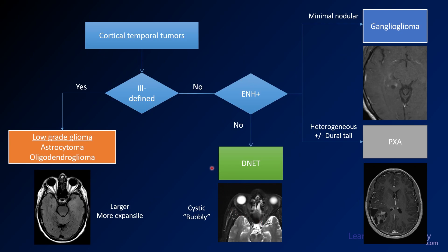This brings us back to the general concept of how to approach corticotemporal tumors. When you see a corticotemporal tumor, first decide if it's ill-defined — this one is pretty well-defined, so no. Then decide if there's enhancement — there is some minimal nodular enhancement here. Based on that, we're looking at a ganglioglioma.